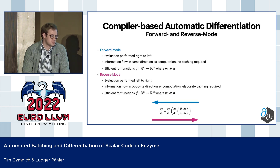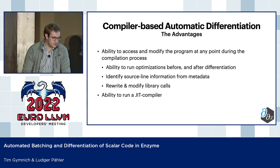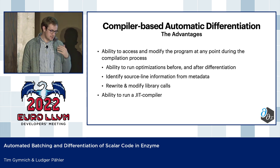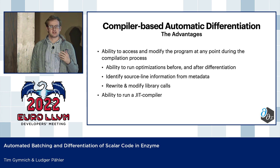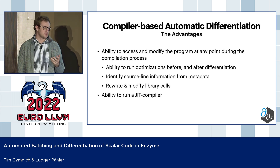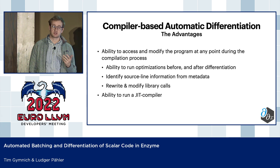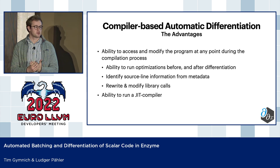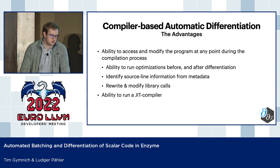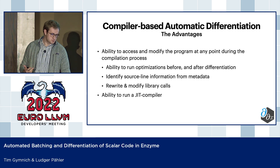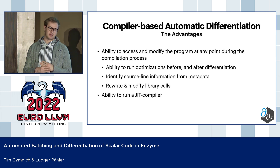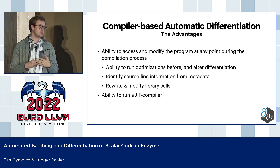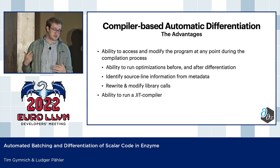So what are the advantages of doing this on the compiler level, and where does Enzyme's philosophy come from? The main intuition behind Enzyme is that running compiler optimizations and utilizing the compiler infrastructure allows you to run much more optimization and produce much more optimal code, and hence be more performant. Because we directly plug into the compiler as a compiler plugin, we're able to run optimizations before and after differentiation, identify information from source line metadata, and rewrite and modify library calls, which is really convenient if we move to stuff like parallelism.